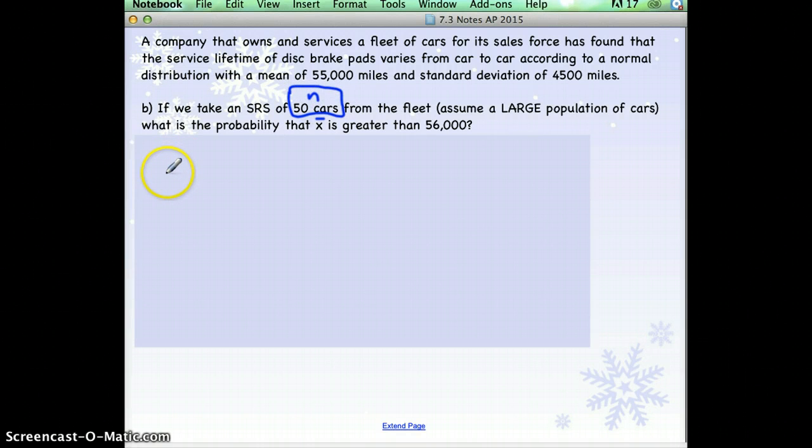Okay, so if we go back and do our formulas, the mean of all of our sample means should equal the mean of the population, which was given to us. It was 55,000.